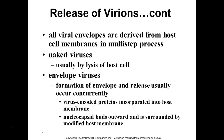All viral envelopes are derived from the cell's membrane — the virus makes its own proteins, inserts them into the membrane, and converts that membrane into an envelope. Naked viruses just burst out of cells. Enveloped viruses go through a process called budding — one buds off, another buds off, until there's no membrane left, the cell deteriorates, and now you have all these viruses.